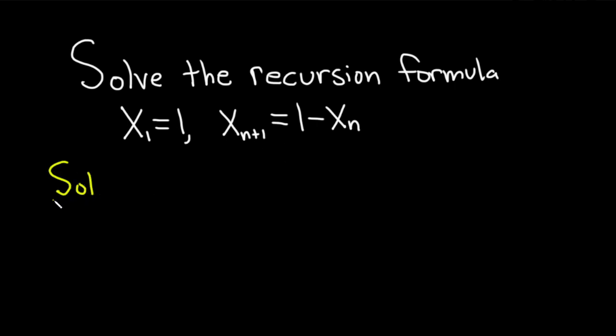Solution. So to do this, there's a couple ways to do it. I'm going to do it just by listing out the terms. Let's try it. So x sub 1 is equal to 1. Let's look at x sub 2.